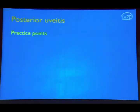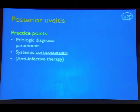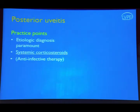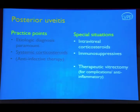For posterior uveitis — a vast topic — etiologic diagnosis is paramount. Systemic corticosteroids are the mainstay of therapy, with appropriate anti-infective therapy when infection is present. Intravitreal corticosteroids and immunosuppressives are needed in special situations. There is also a role for therapeutic vitrectomy as it not only reduces vitreous inflammation but also helps resolution of focal choreoretinal lesions.